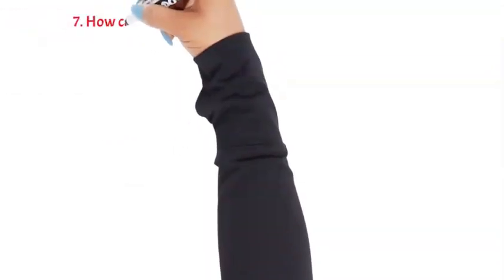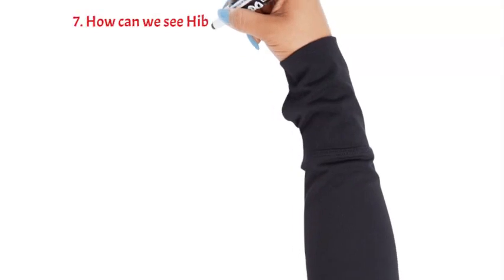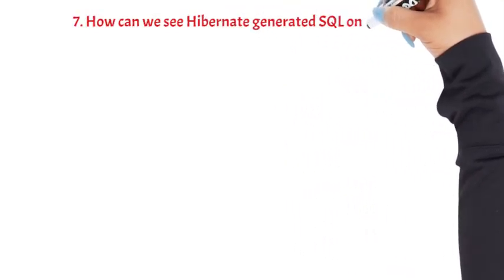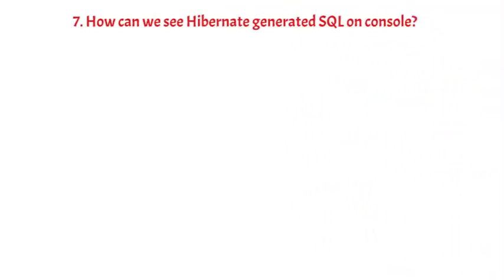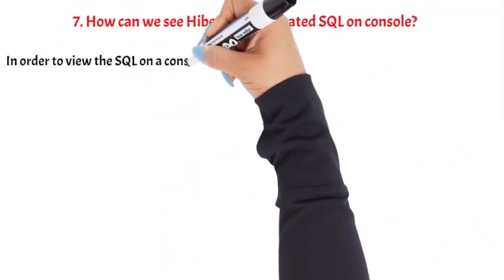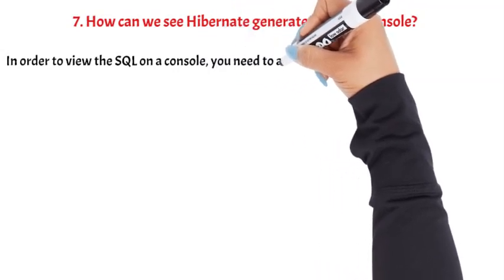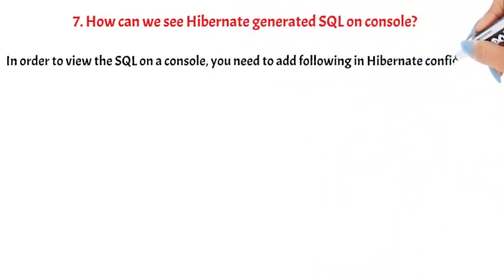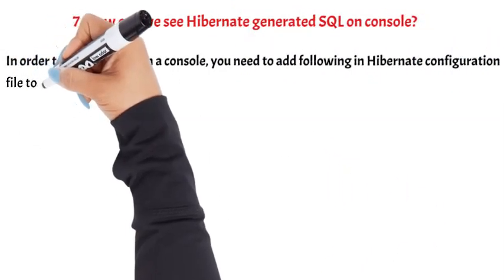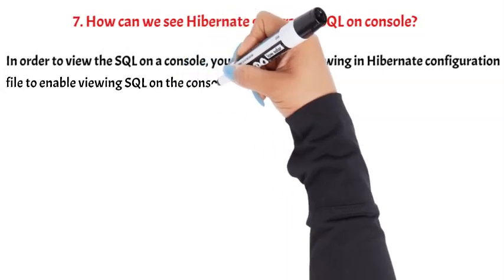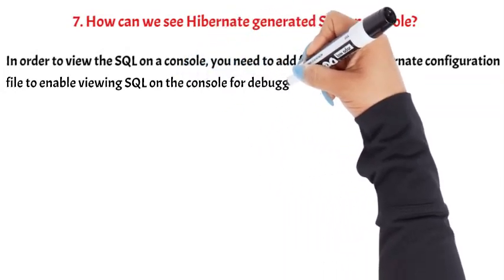Question 7: How can we see Hibernate generated SQL on console? In order to view the SQL on a console, you need to add the following in the Hibernate configuration file to enable viewing SQL on the console for debugging purposes.